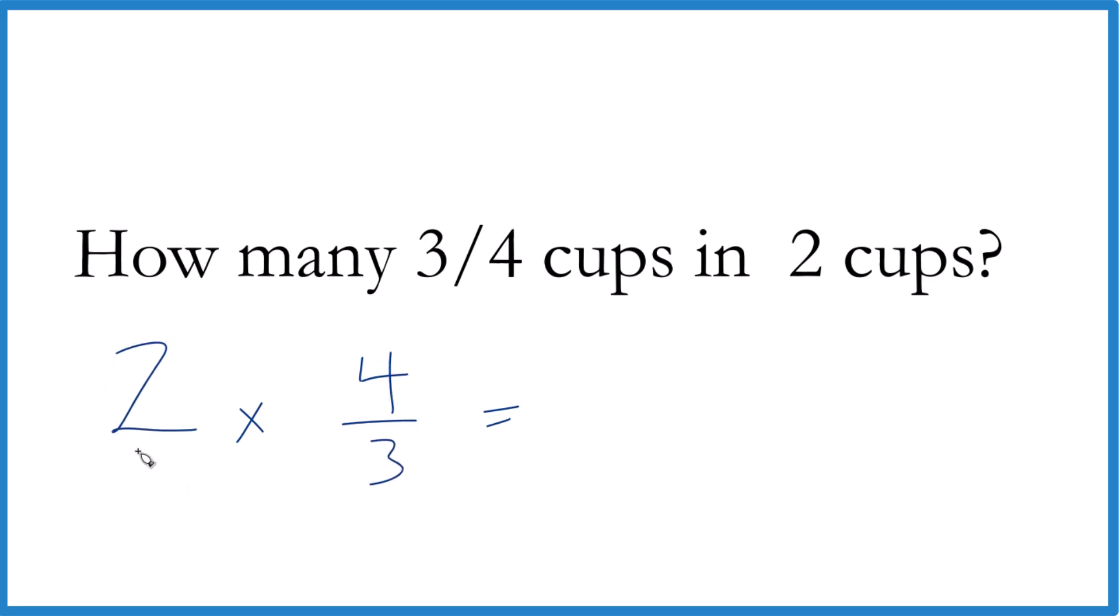Then let's just call this two over one. It's still two, things just line up better. Two times four is eight, one times three is three. So we end up with eight-thirds.